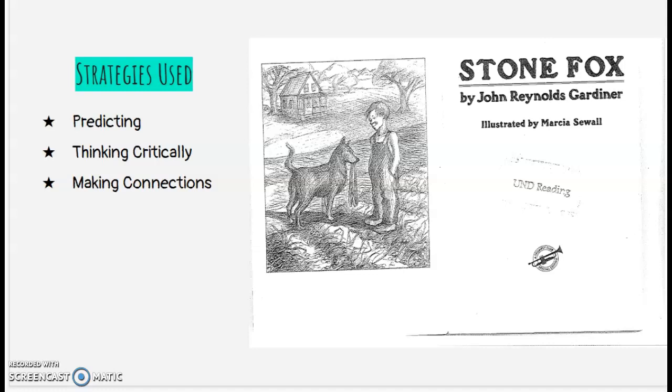As I was looking at the first page, I was predicting that it would be about a little boy and his dog. And then I was critically thinking that it must be set on a farm or something, because it looks like they're out in an open space, maybe out in the country a little bit. And then I was also making connections, thinking about my dog when I was growing up, a black lab. The picture just reminded me of him and what he looked like.